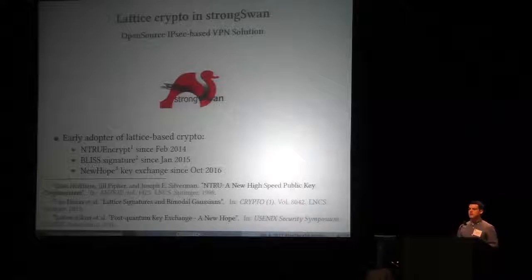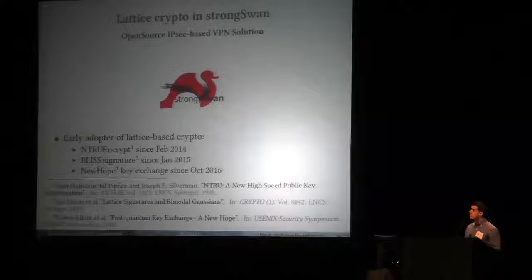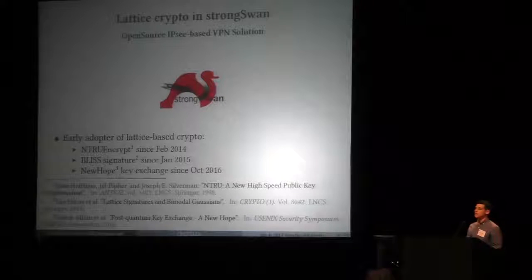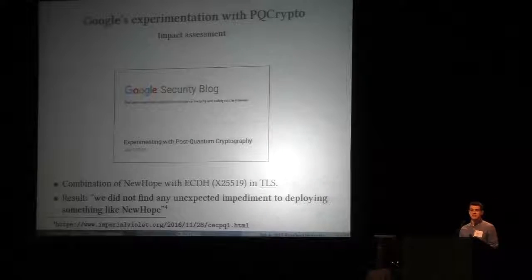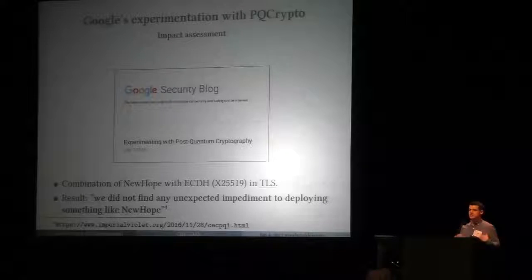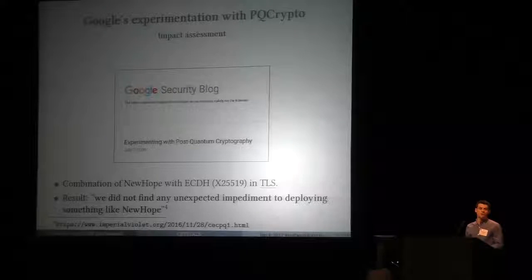Lattice cryptography is actually already out and already used. For example, in StrongSwan — an open-source IPsec VPN solution — TrueEncrypt has been in here since February 2014, the Bliss signature scheme since 2015, and NewHope key exchange mechanism since last October. Also, Google did an impact assessment about how NewHope would behave if we were doing a key exchange with NewHope and Elliptic Curve. They let it run for a few months, collected a lot of data, and concluded that they didn't find any unexpected impediment to deploying something like NewHope.